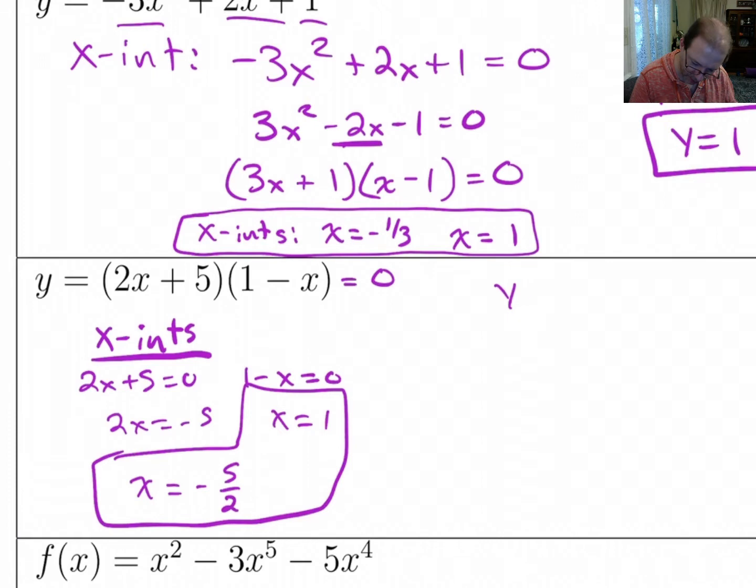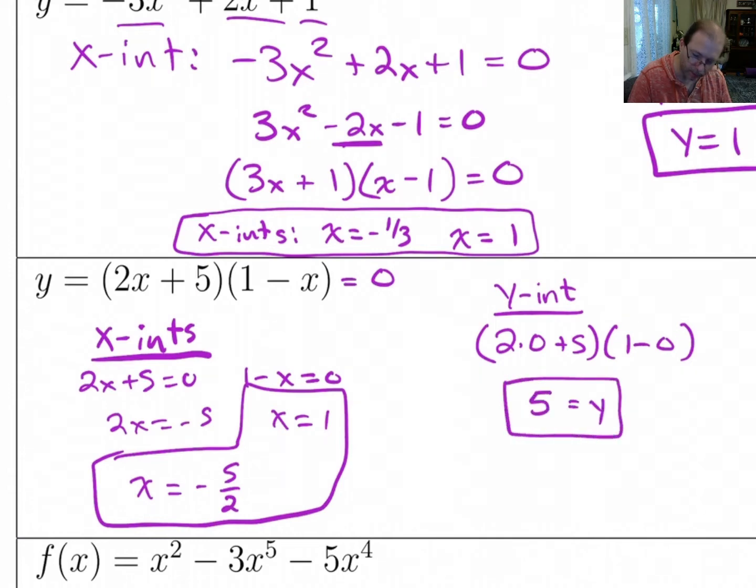The y-intercept, I guess on this one, the y-intercept is a little more work, but not much. All you got to do is plug in 0 for both the x's. So you get 2(0) + 5 times 1 - 0, so that's just 5 times 1 is 5.